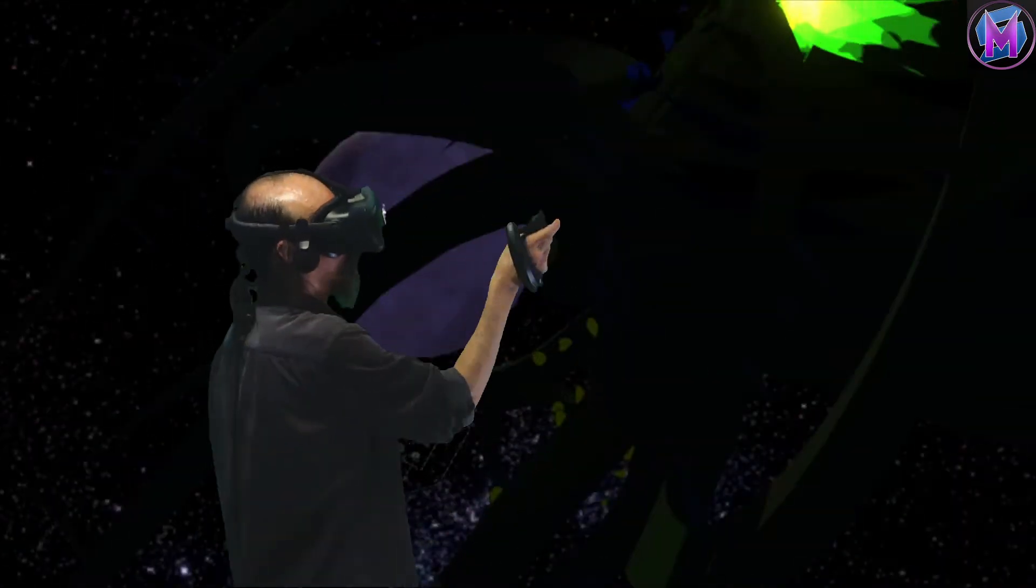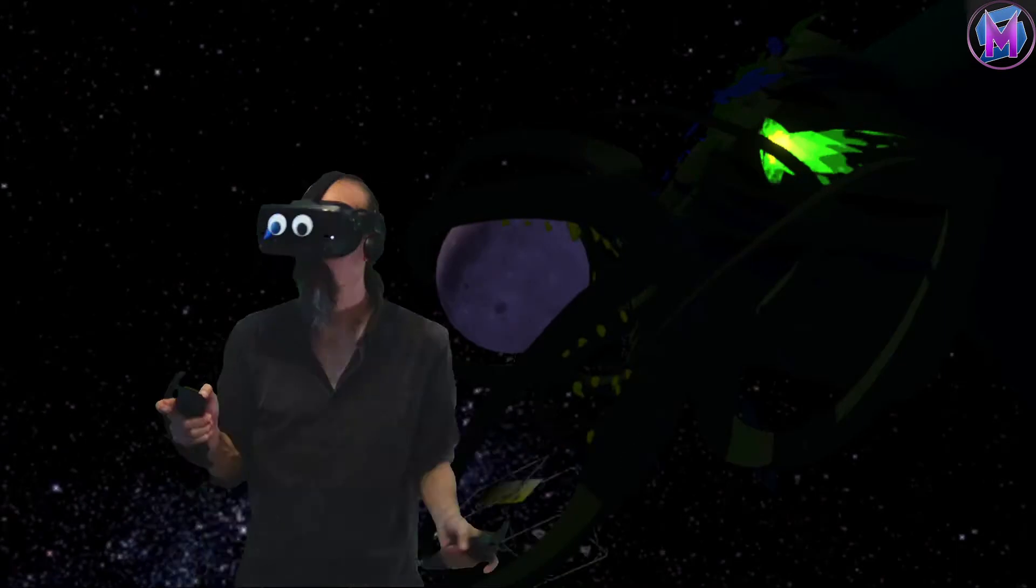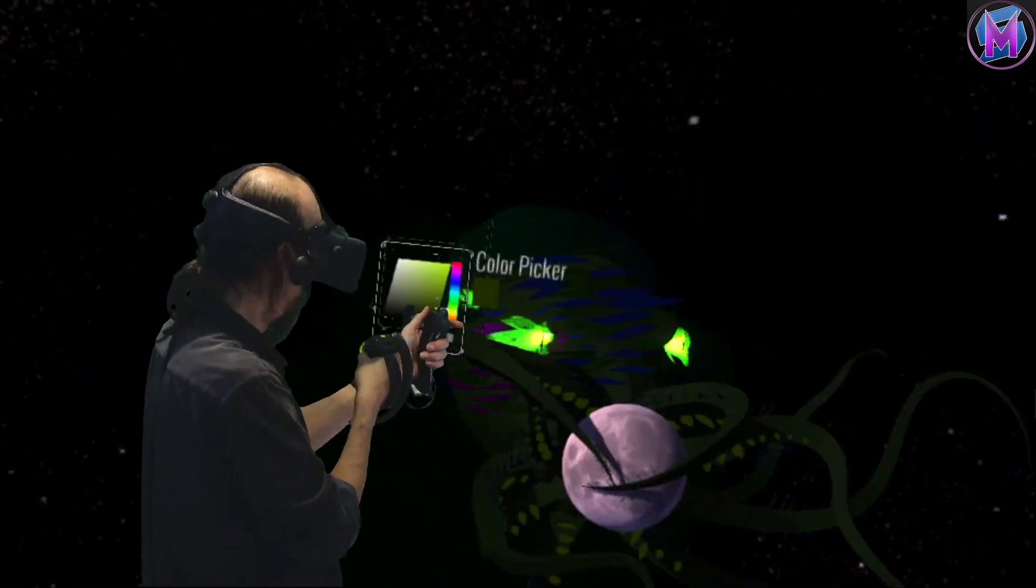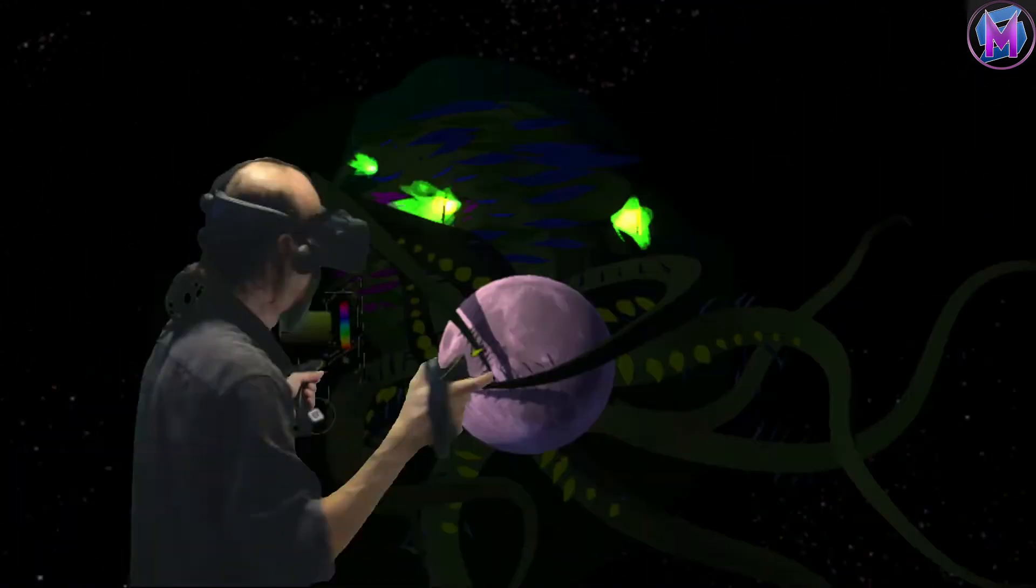Ia Shub-Niggurath, as a foulness shall ye know them. Their hand is at your throats, yet ye see them not.